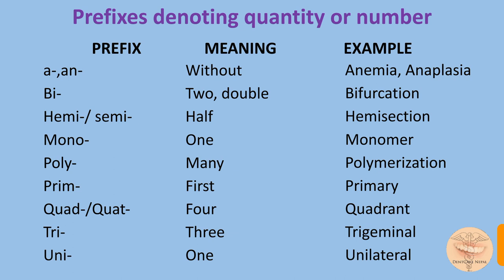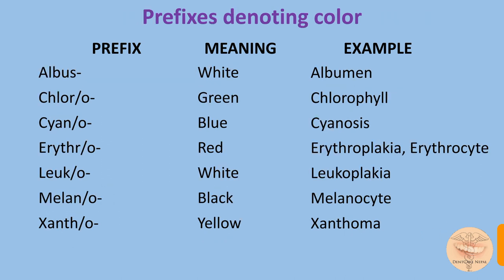The prefix 'quad' denotes four — quadrant, quadrangular, quadruped. The prefix 'tri' means three; an example is trigeminal — the nerve that has three divisions, the trigeminal nerve. 'Uni' means one — unilateral. And there are some prefixes which denote color, and it is quite beneficial if you memorize them.